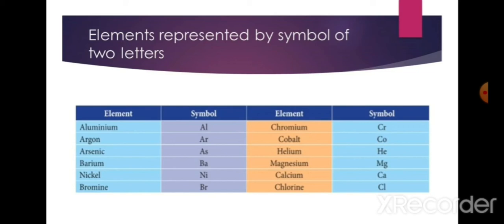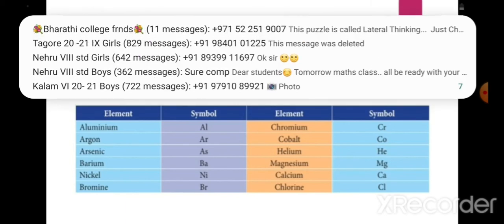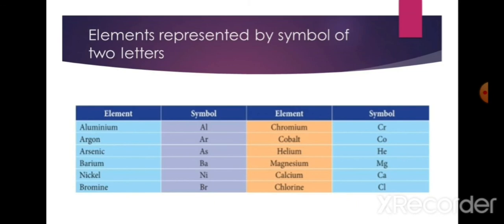Looking at the table, elements aluminium, argon, and arsenic all begin with A. So aluminium uses the second letter: Al. Argon uses Ar. Arsenic uses As — here arsenic uses its third letter because argon and arsenic share the second letter R. Barium and bromine both use their second letter. Chromium uses its third letter and cobalt uses the second. Calcium uses its second letter and chlorine uses its third letter, because chlorine and chromium share the same second letter.